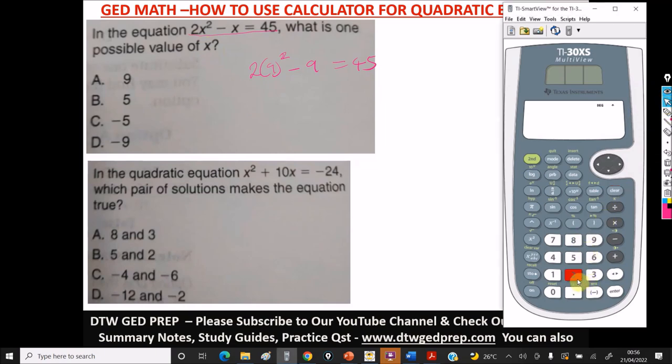So all you need to do is come here to the calculator. We have 2 in parenthesis, 9 squared, close the parenthesis, then minus 9, enter. This gives us 153. So 153 isn't equal to 45, so this is not an answer.